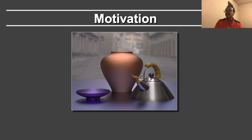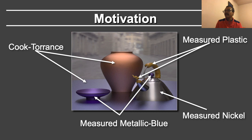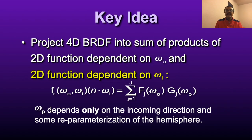Here was our motivation. You have this nice scene with a variety of BRDFs: Cook-Torrance BRDFs for the vase and the table, measured plastic reflectance, measured metallic blue reflectance, and measured nickel. The last three come from the measured BRDF database of Matusik et al. The key idea was to project the 4D BRDF into a sum of products of a 2D function dependent on omega in. Omega out is known, so that value can be taken out, but you need to sample over the distribution over omega in, and we showed how to do this.